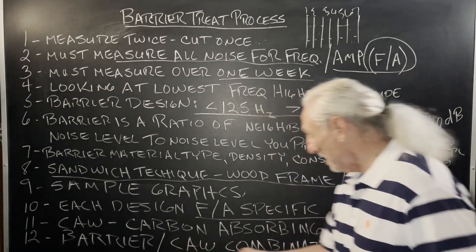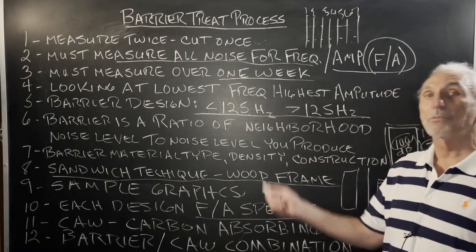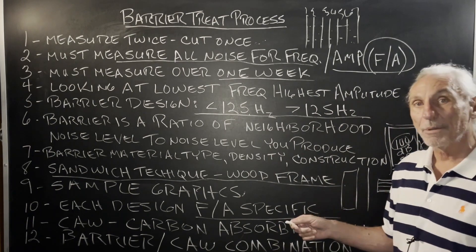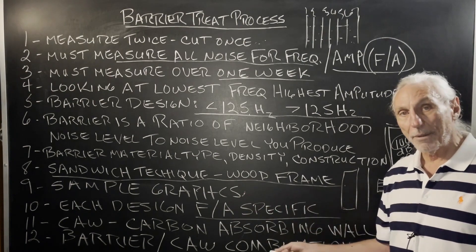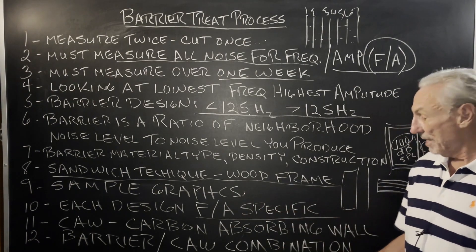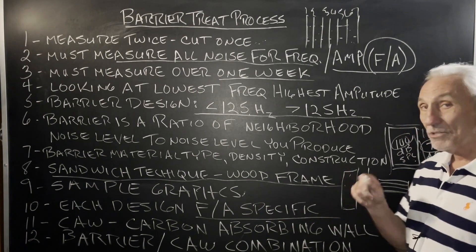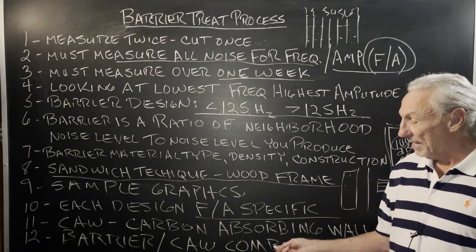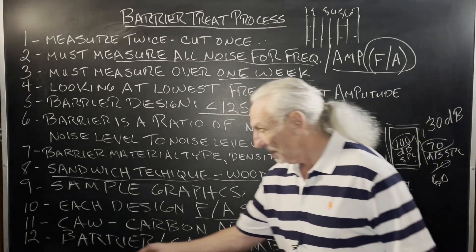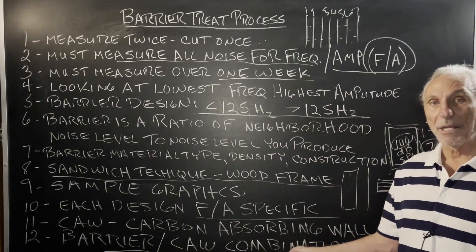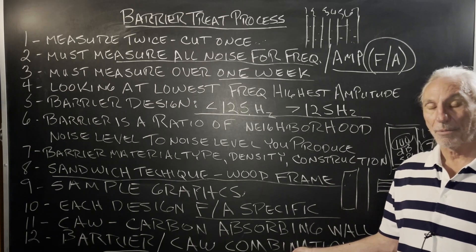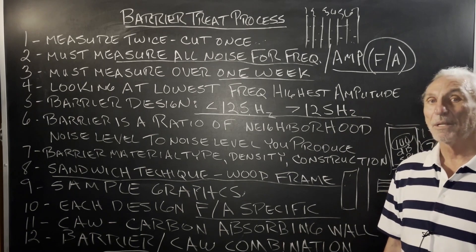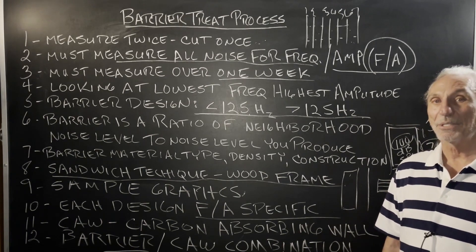With barrier and CAW, we have our CAW process where we build our low-frequency management with our carbon technology between the studs. There's a way to incorporate the barrier and the CAW into one stud design — you need a two-by-twelve stud frame, but we can do it. We have drawings to help you do that, if your noise falls within the space we have to work with to stop it with the sandwiches. You've got to fit a carbon filter in there too that's four inches deep, but it can all be calculated and designed for.